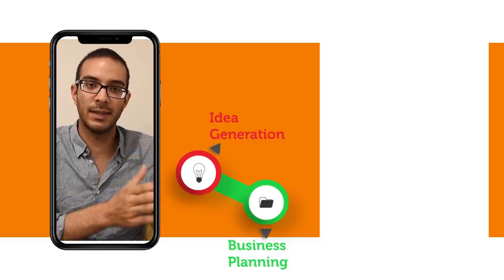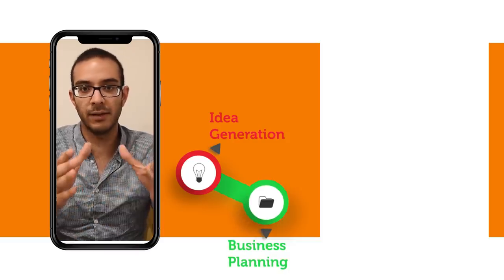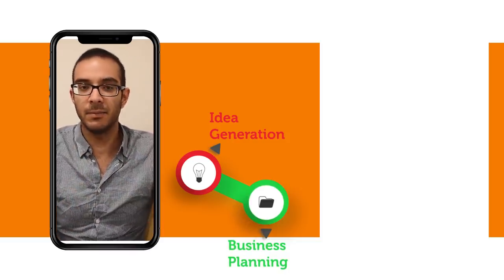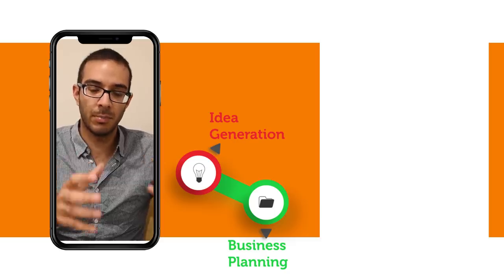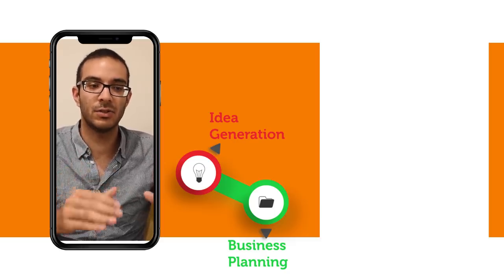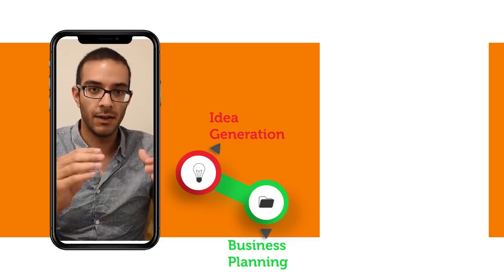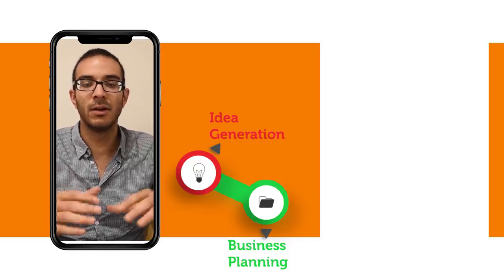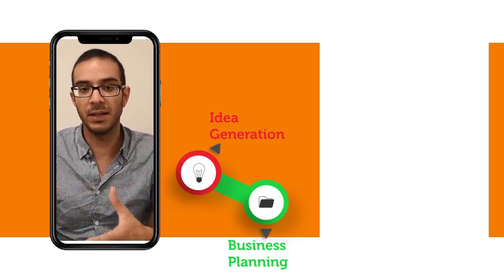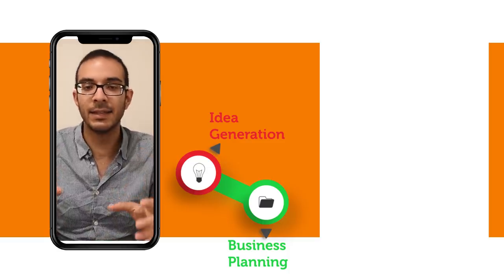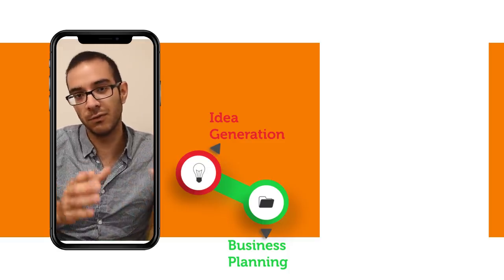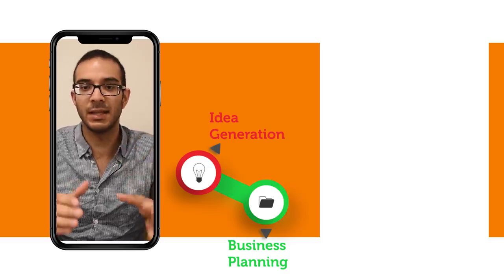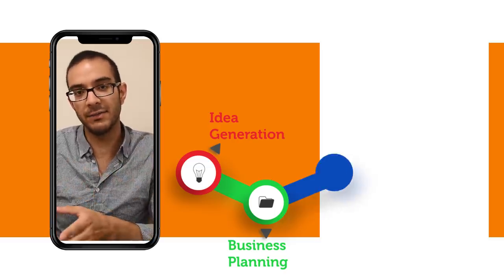The second step is going from the idea to real planning. Here I recommend: don't focus too much on the plan. Yes, having a structure is good — you can write a business canvas or your own business plan as a guide — but you should not focus only on the guide. You should actually move on to the third step, which is the operative part.